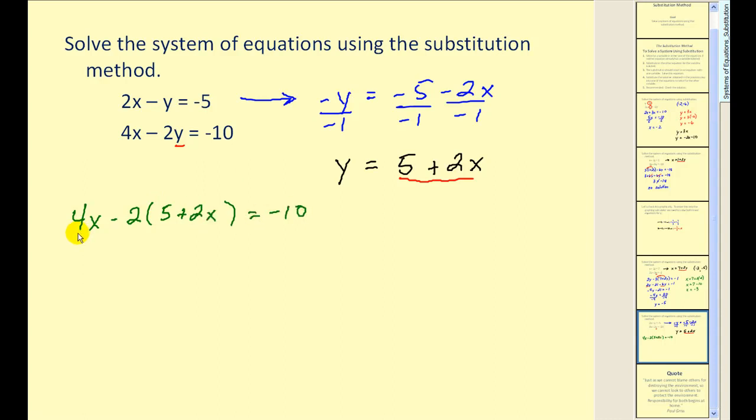Again, the main idea here is we've done substitution to form an equation with one unknown. We'll distribute our negative 2 and solve for x. Now just like a previous example, the variable terms simplified to zero. But now we're left with a true statement.